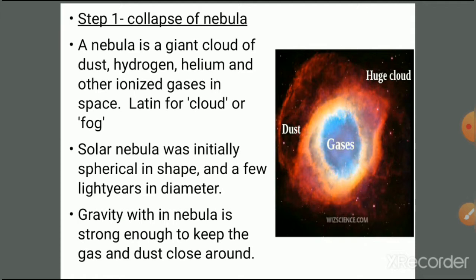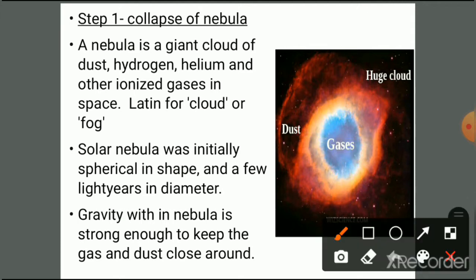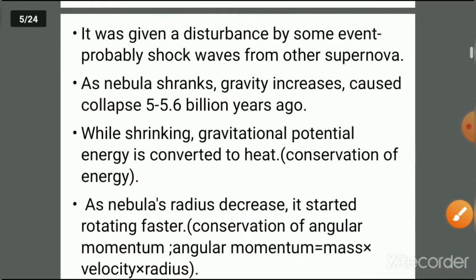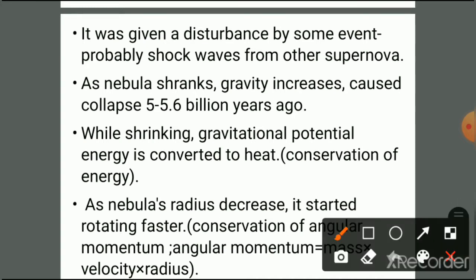The nebular hypothesis includes five major steps. In Step 1, nebular collapse takes place. A nebula is a giant cloud of dust, hydrogen, helium, and other ionized gases in space. The Latin meaning of nebula is cloud or fog. The solar nebula was initially spherical in shape and a few light years in diameter. Gravity within the nebula is strong enough to keep the gas and dust close together. Then an external disturbance, like shock waves from a supernova, caused the nebula to start shrinking and gravity increased, causing a collapse.